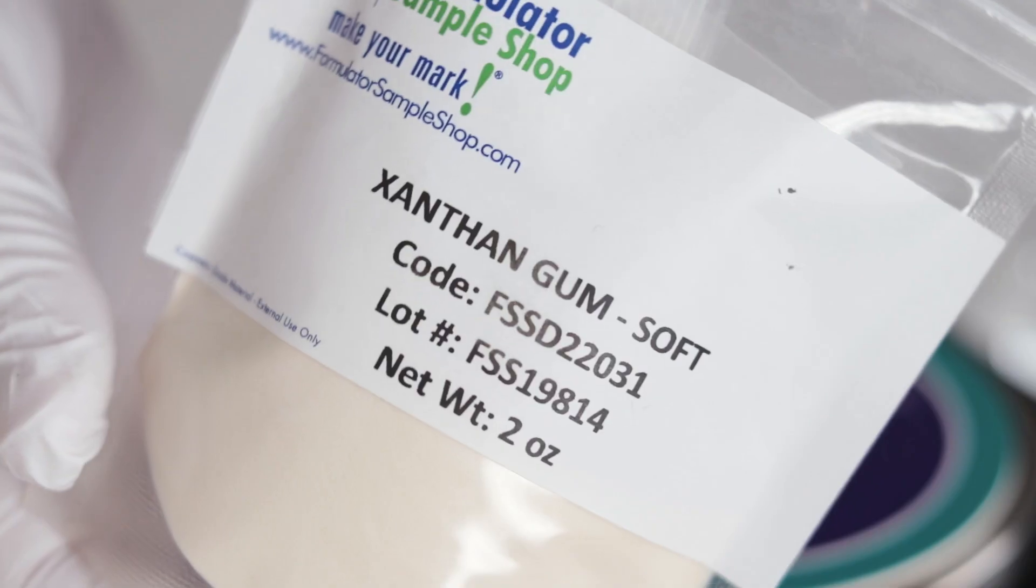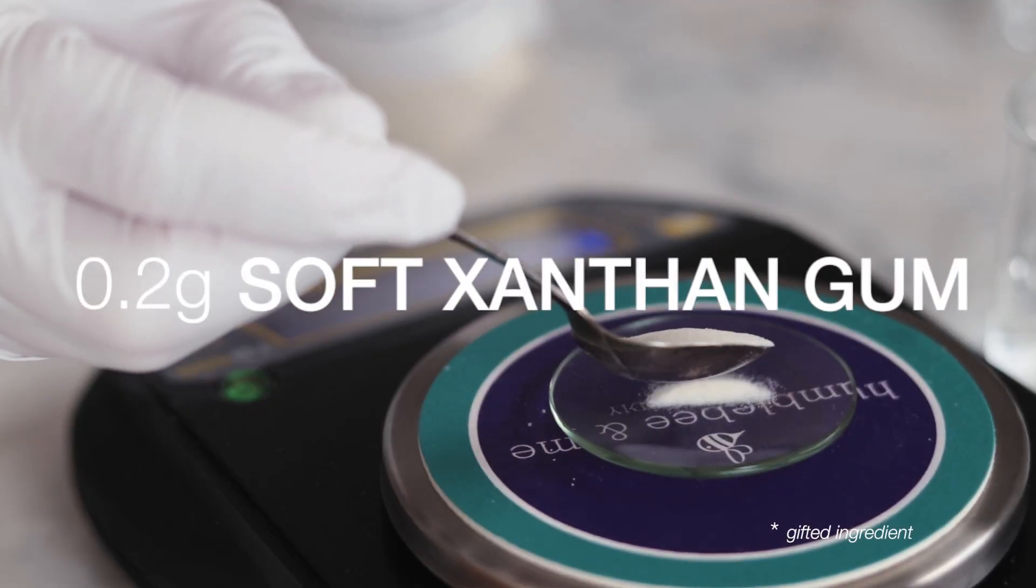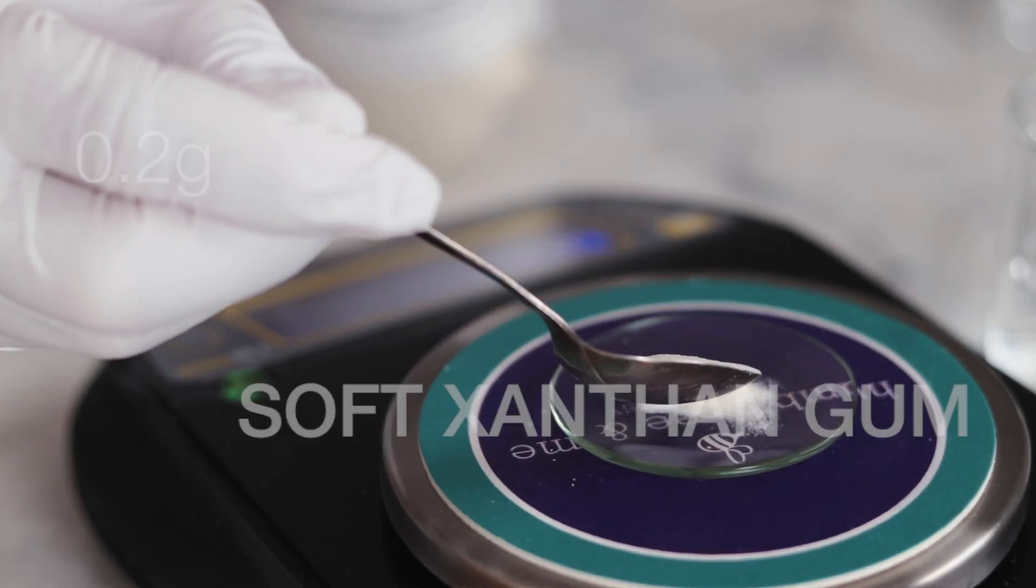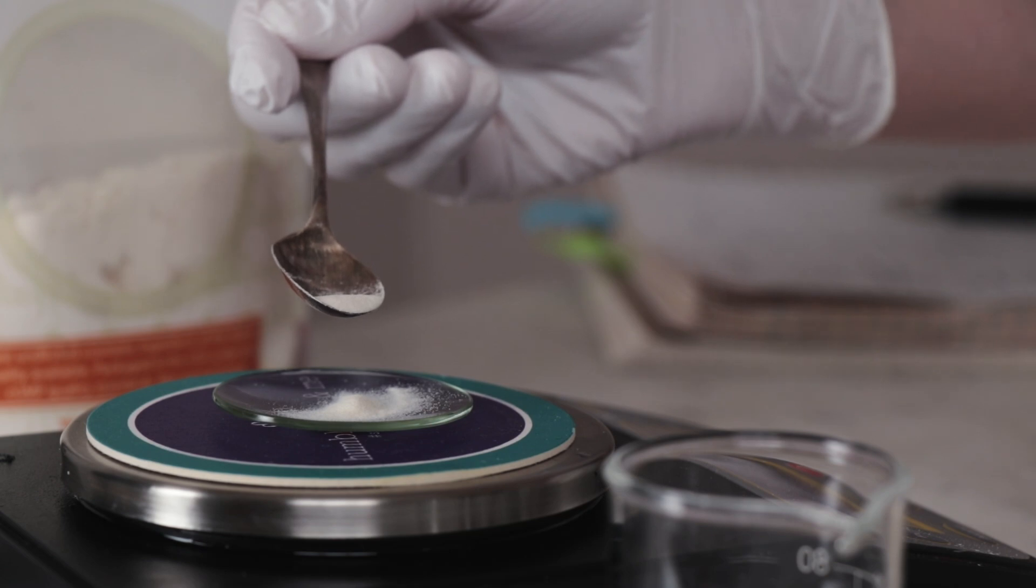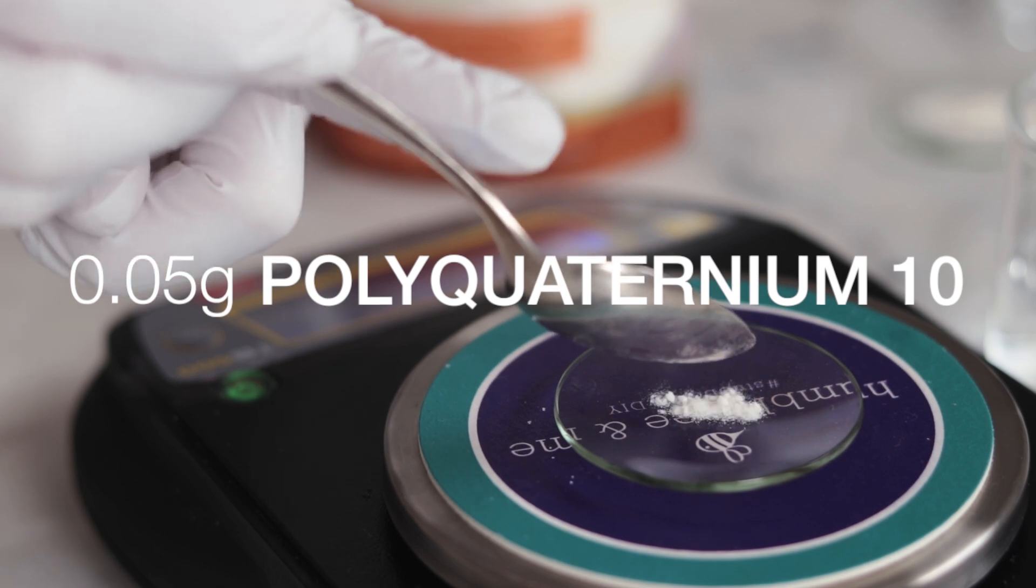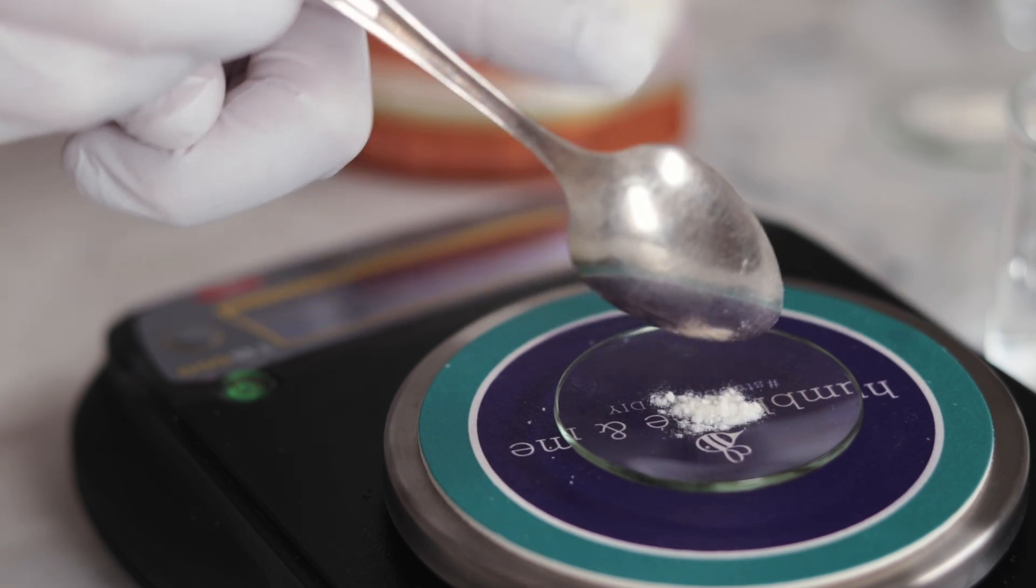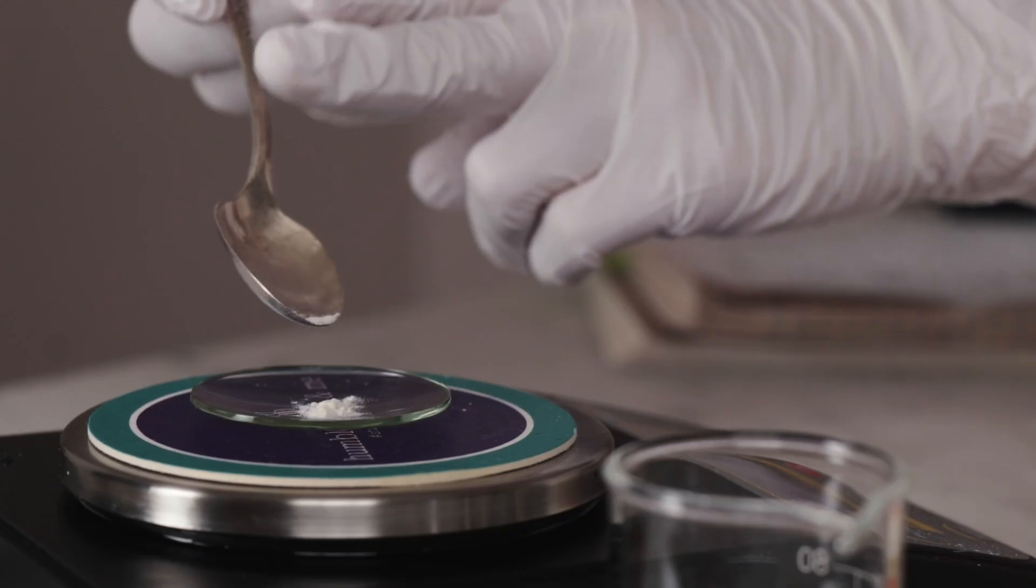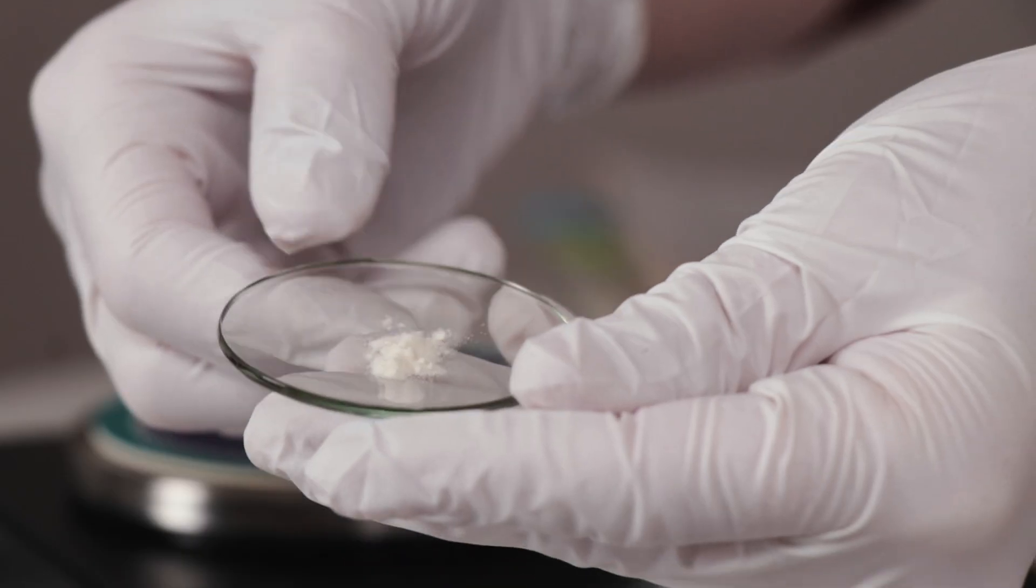Our next two ingredients are thickening ingredients, so they help give this formulation a bit of body so it has more of a rich, serum-y feel and doesn't feel watery. You'll need 0.2 grams of soft xanthan gum and 0.05 grams of polyquaternium-10. If you don't have both of these ingredients, you can use all soft xanthan gum, though you want to use a bit more. You'll find full details in the partner blog post, along with a coupon code to save 20% at Formulator Sample Shop.